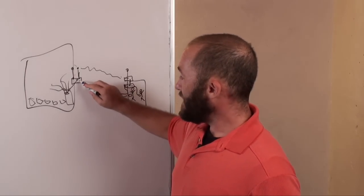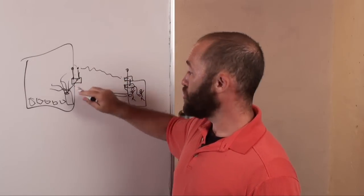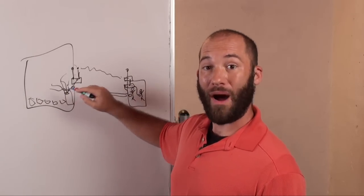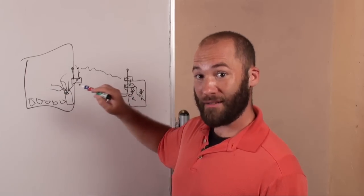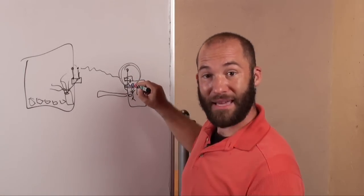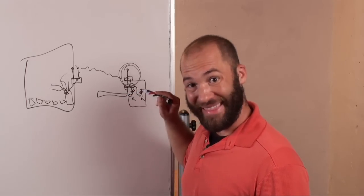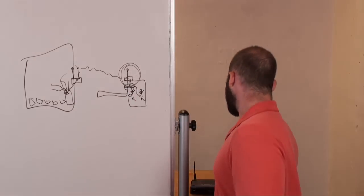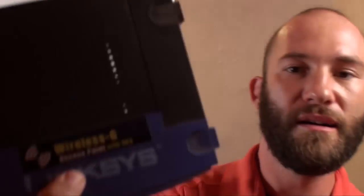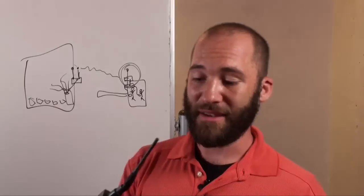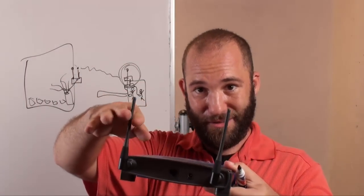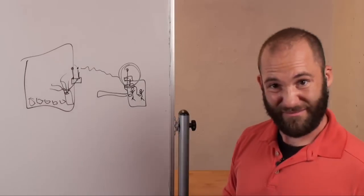The access point connected to your main network can be either a wireless router or a wireless access point. However, the access point on the guard shack side has to be a wireless access point, and only a wireless access point — that is very, very important. You can buy just the Linksys wireless access point; it will say only 'access point.' This is not a wireless router. Basically, the signals come through the air, into the wireless access point, and then go out on a little network cable.